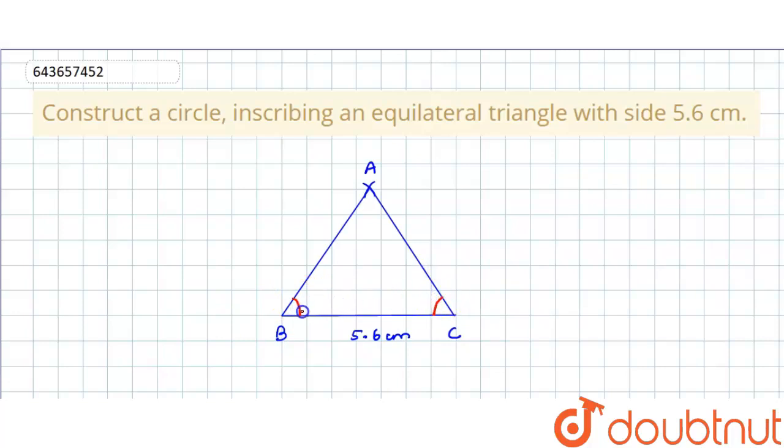We'll take the compass with some radius, put the pointer at the point where this line cuts BC and make a mark. With the same radius, put the pointer where this line cuts AB and cut this mark.